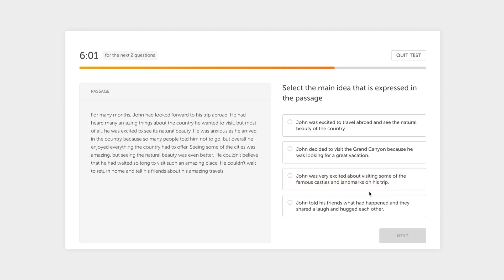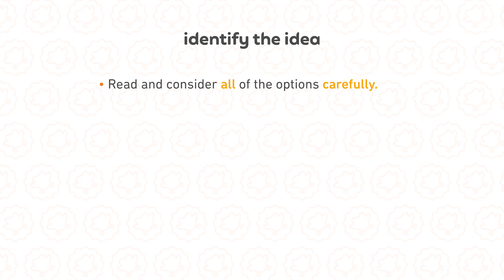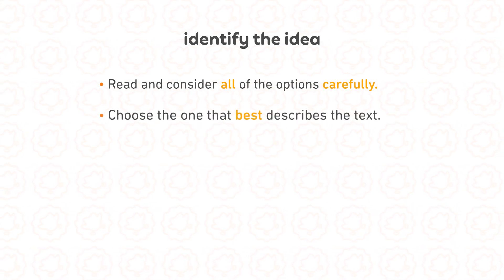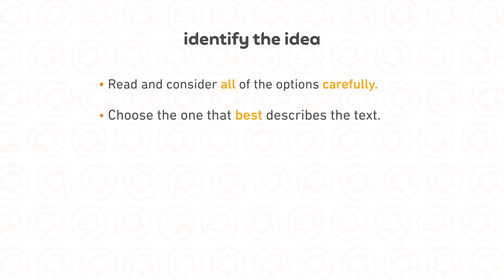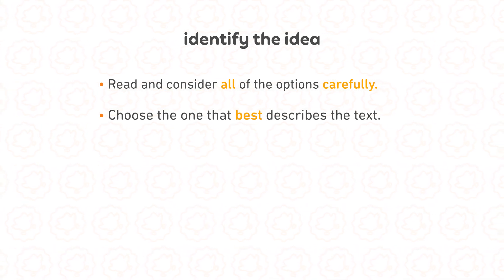The next question type we'll talk about is called identify the idea. Identify the idea asks you to select the idea that is expressed in the passage. In this task, you will select an idea from the list that best represents what you read in the passage. Read and consider all of the options carefully. Some of the options may be somewhat relevant, but make sure to choose the one that best describes the text. Once you select your response, the box around it and the circle next to it will turn orange.